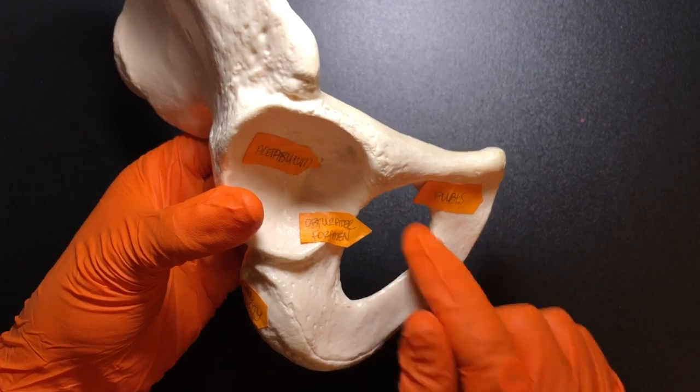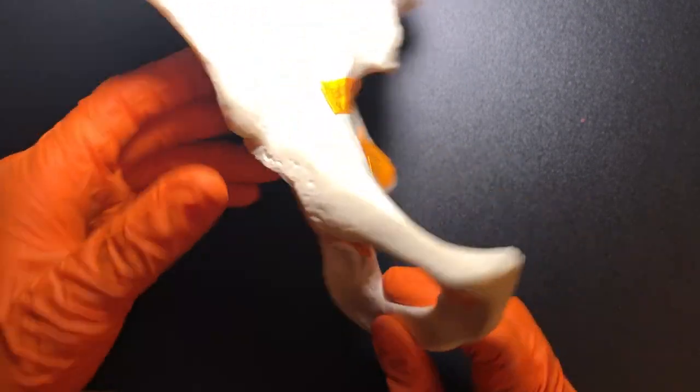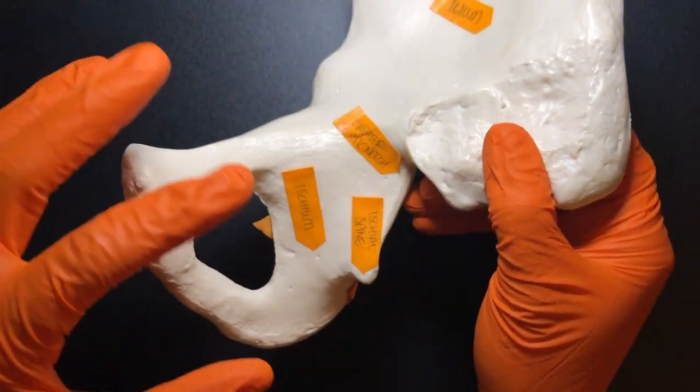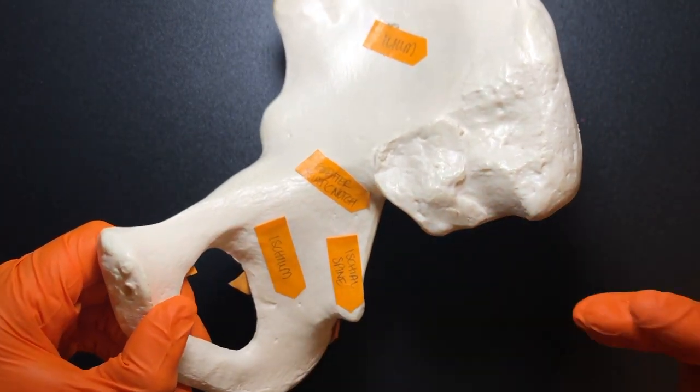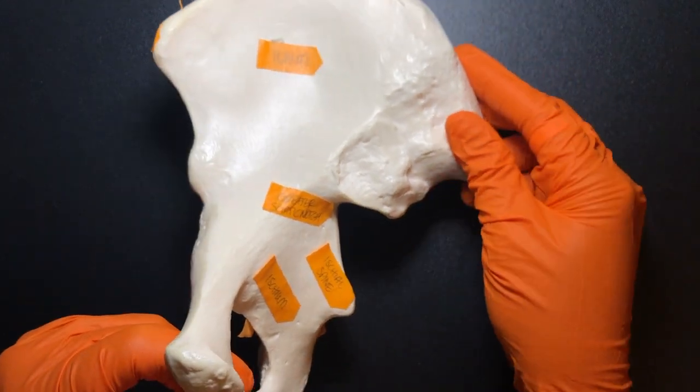Here we have the obturator foramen. And again, anytime we have things like foramens or holes, we're going to have things like blood vessels and nerves run through those.